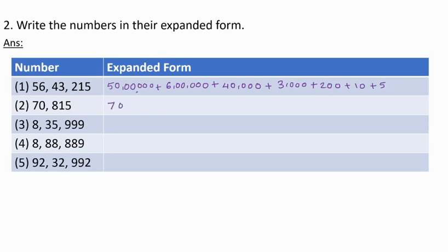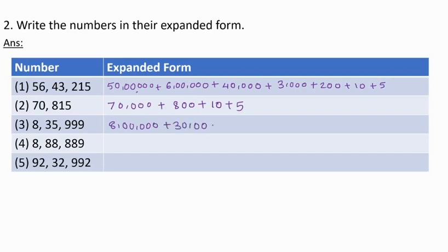Next number: 70,815. The answer is 70,000 plus 800 plus 10 plus 5. Here, we have not written any place value for 0. We can always skip 0 in expanded form. Next number: 8,35,999. The answer is 8 lakh plus 30,000 plus 5,000 plus 900 plus 90 plus 9.